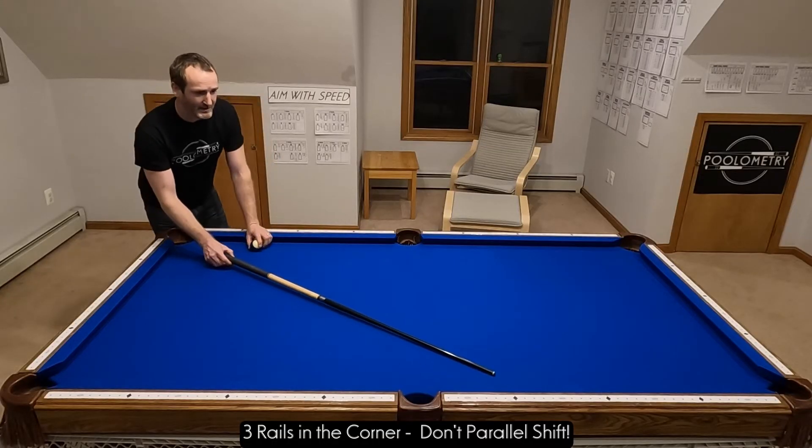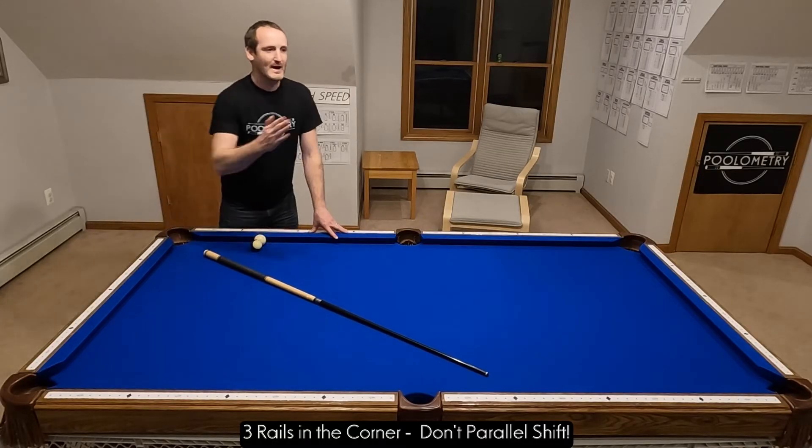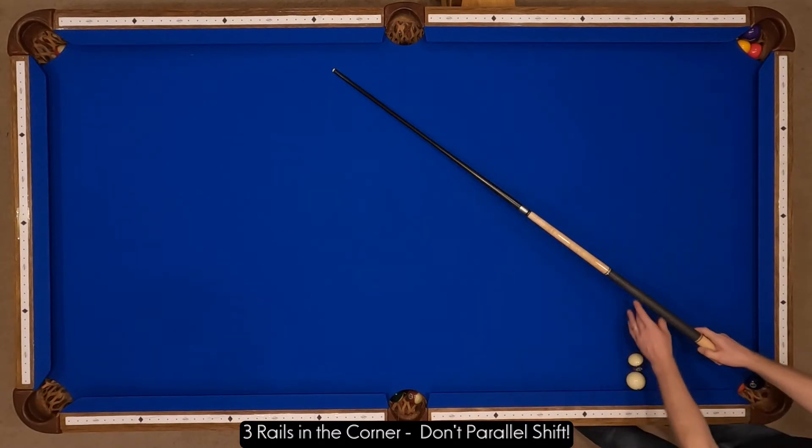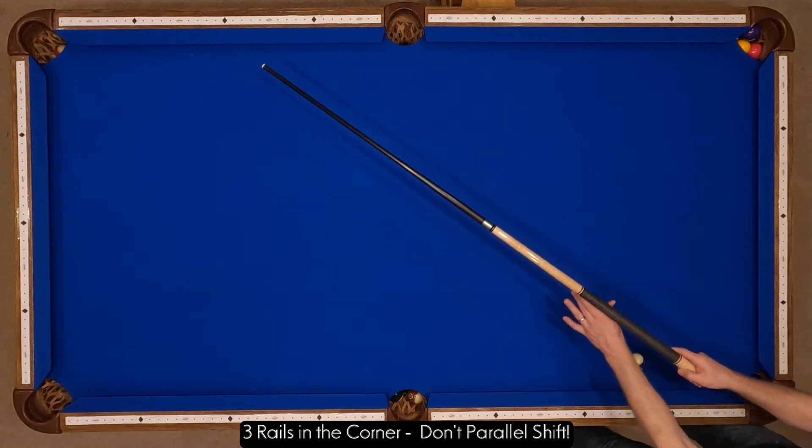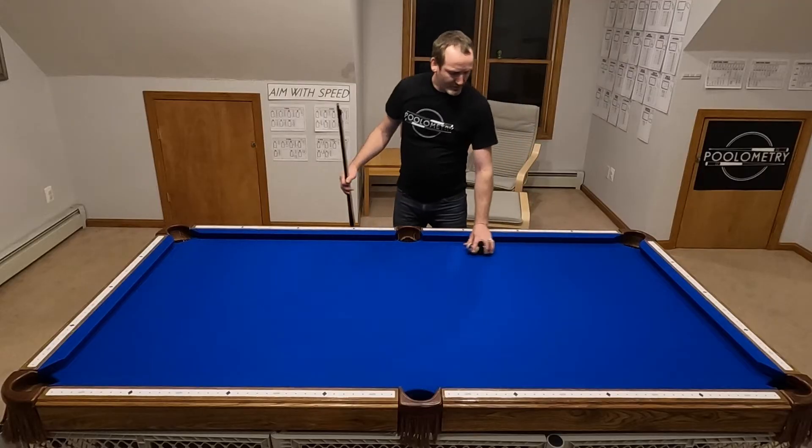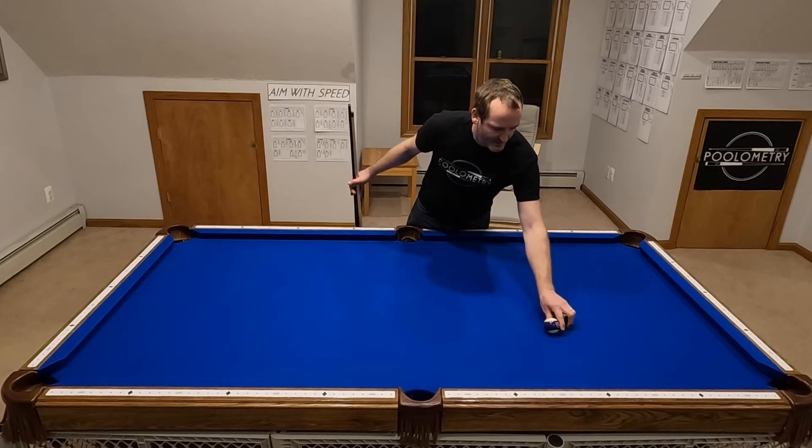What should be happening is once you find your line of aim, you would imagine a vanishing point, and getting that vanishing point exactly is like the heart of aim with speed, is figuring out where that is, and then figuring out how not to do a parallel shift, but how to rotate like the hand of a clock.